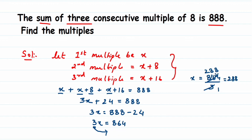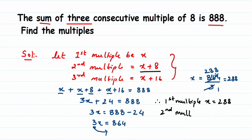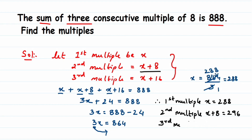Therefore, the first multiple, which we assumed as x, equals 288. The second multiple is x plus 8, which is 288 plus 8, giving us 296. The third multiple is x plus 16, which is 288 plus 16, giving us 304.